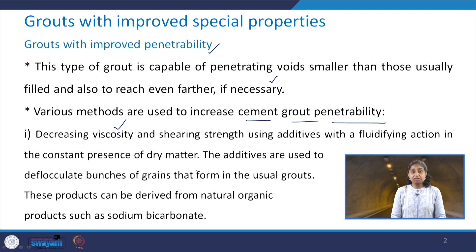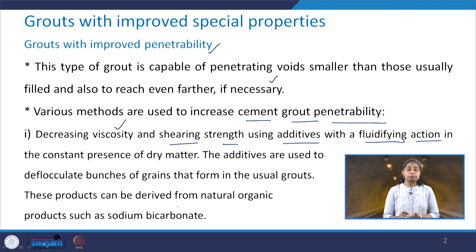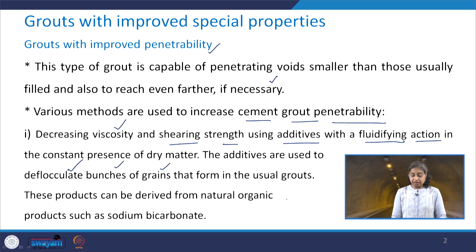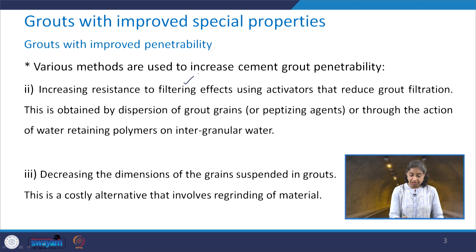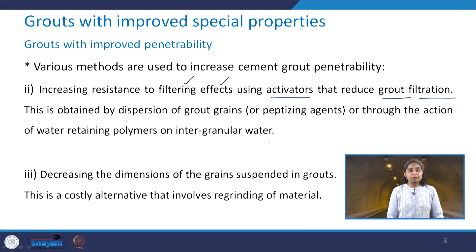The first method is by reducing the viscosity and shearing strength using additives with a fluidifying action in the constant presence of the dry matter. The additives are used to deflocculate bunches of grain that form the usual grouts. Such products can be derived from natural organic products like sodium bicarbonate. The second method is by increasing the resistance to filtering effects using activators which reduce the grout filtration. This is obtained by dispersion of grout grains or through the action of water-retaining polymers on intergranular water.